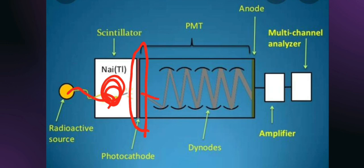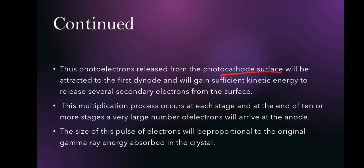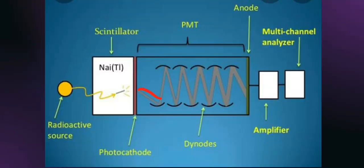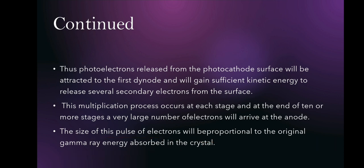The electrons released by the photocathode are attracted by the dynodes. We have a number of dynodes in series in the PMT. These dynodes are positively charged and attract the incoming electrons. The photoelectron released from the photocathode surface is attracted to the first dynode and gains sufficient kinetic energy to release several secondary electrons from its surface. Similarly, at each successive dynode, more electrons are produced, multiplying throughout the tube. The size of this pulse of electrons is proportional to the original gamma ray energy absorbed in the crystal.